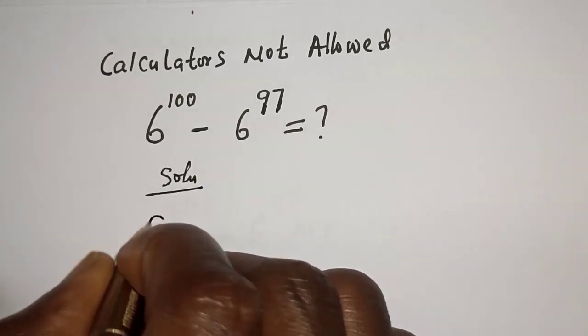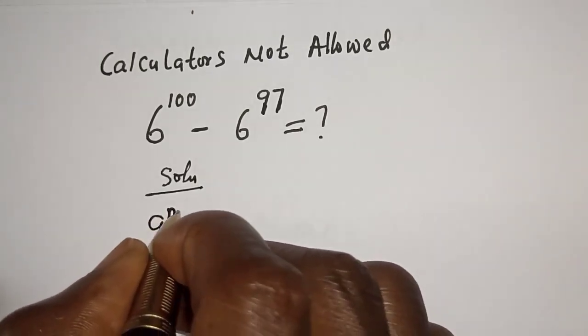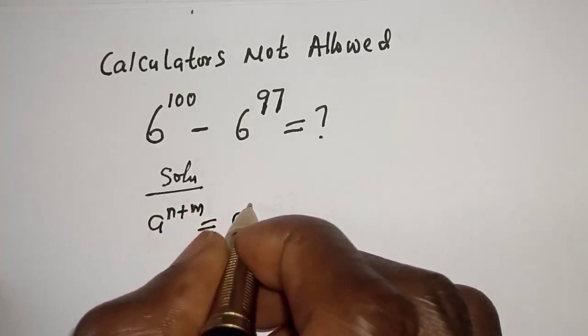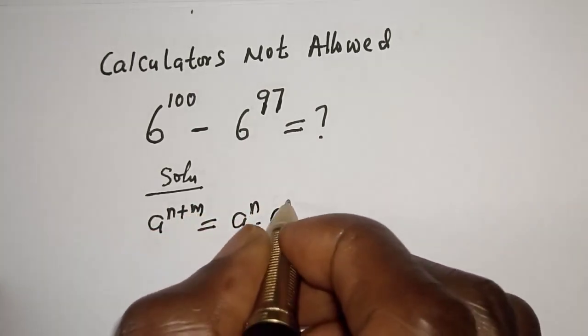If you have a raised to power n plus m, this is equal to a raised to power n multiplied by a raised to power m.